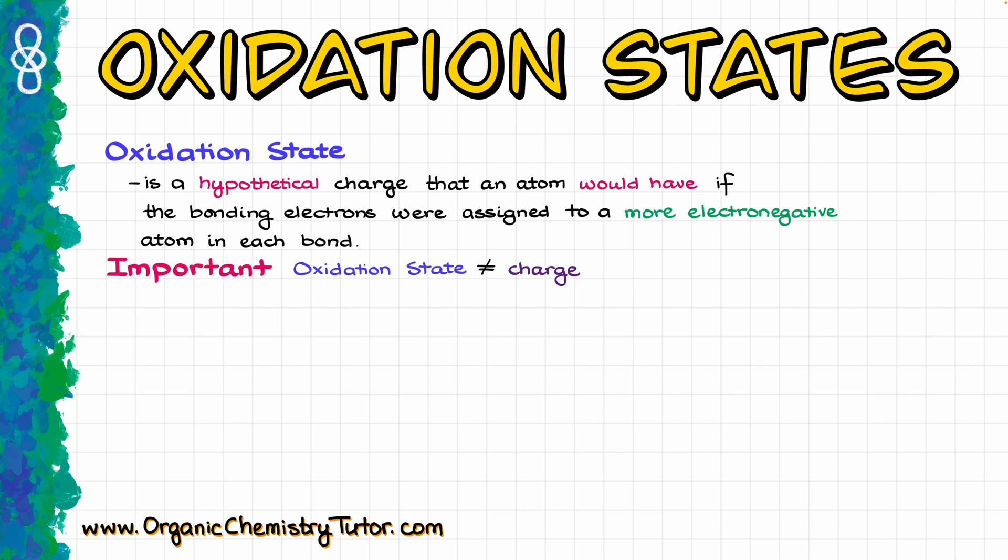But there is a very important distinction between the oxidation state and charges. Those are not the same thing. When it comes to a charge, the charge is a real and very much measurable net gain or loss of the electrons in the molecule. So, for instance, if I look at this methyl anion, CH3-, we have a very real electron pair on our carbon, and carbon has excess of the electron density.